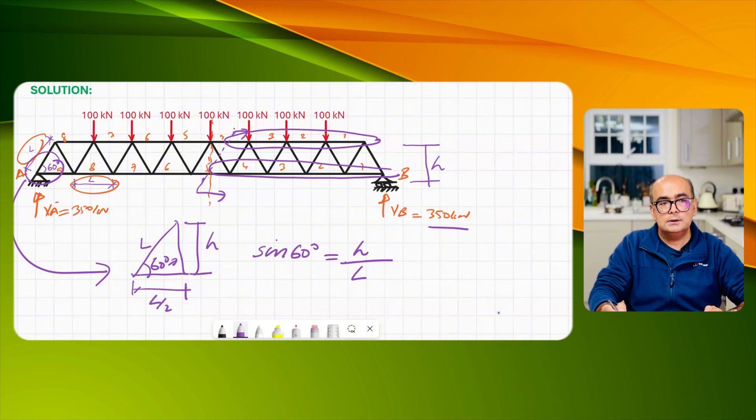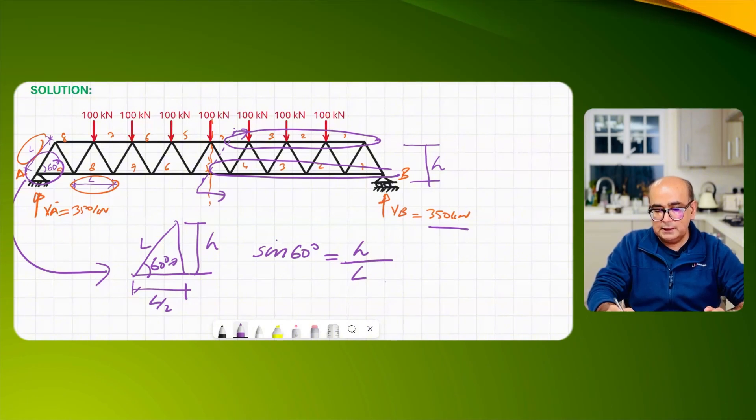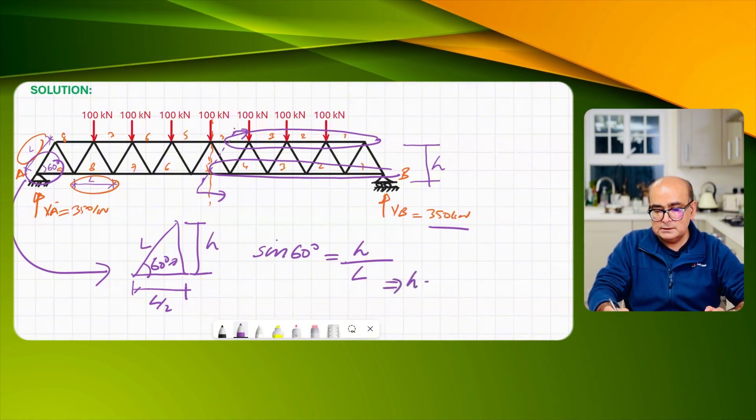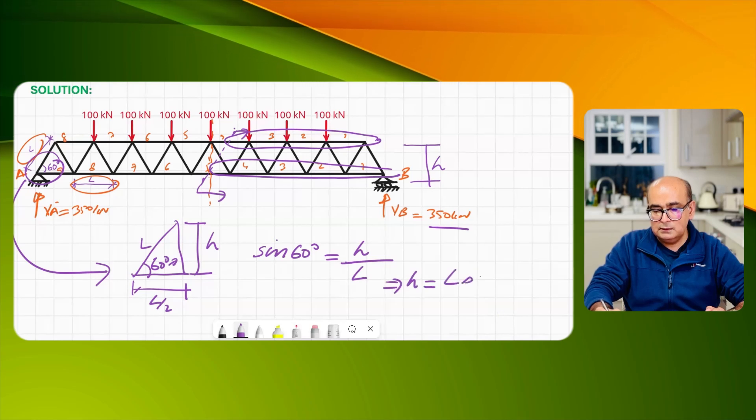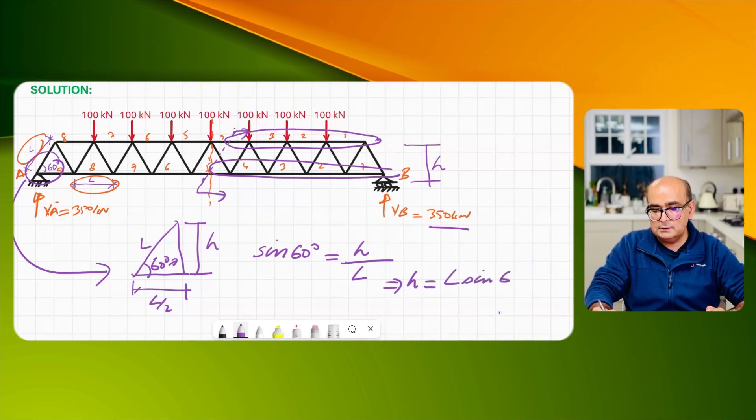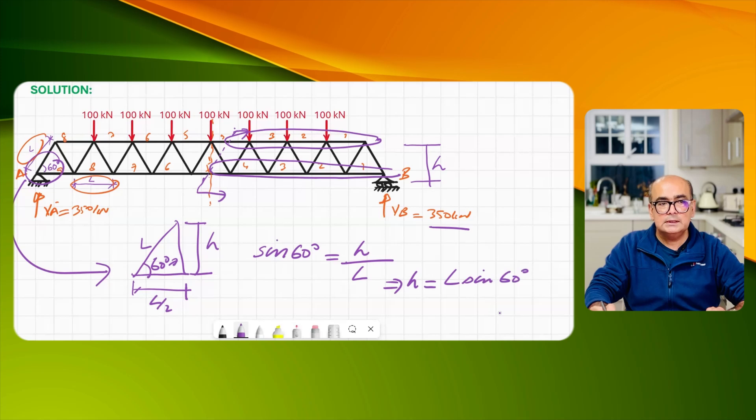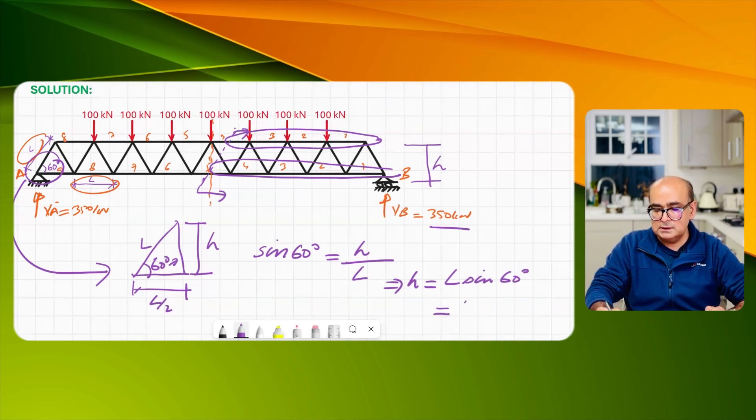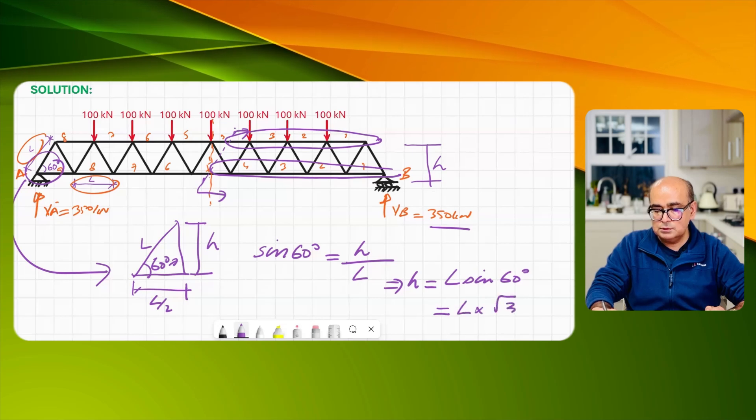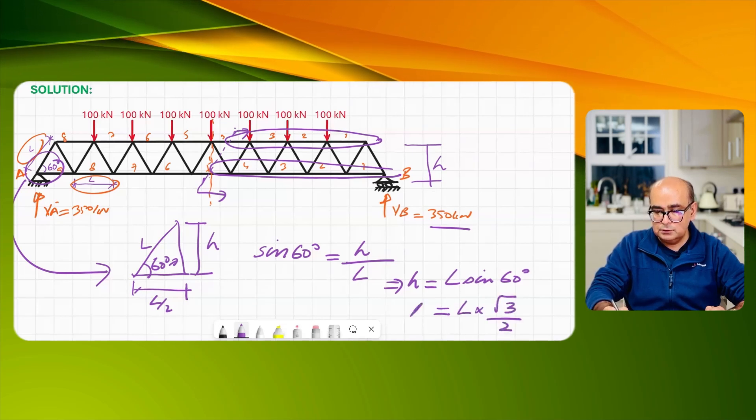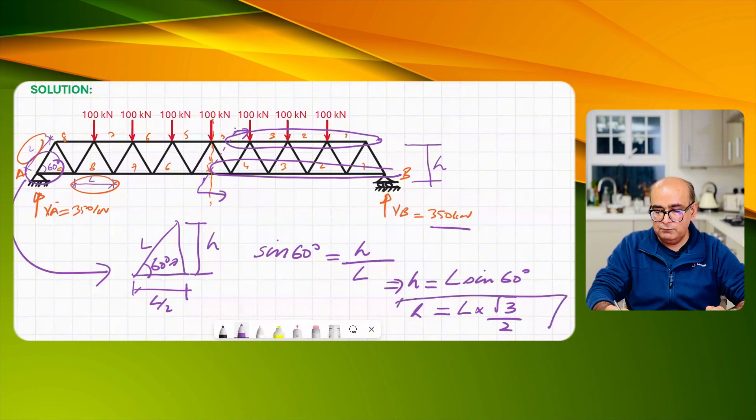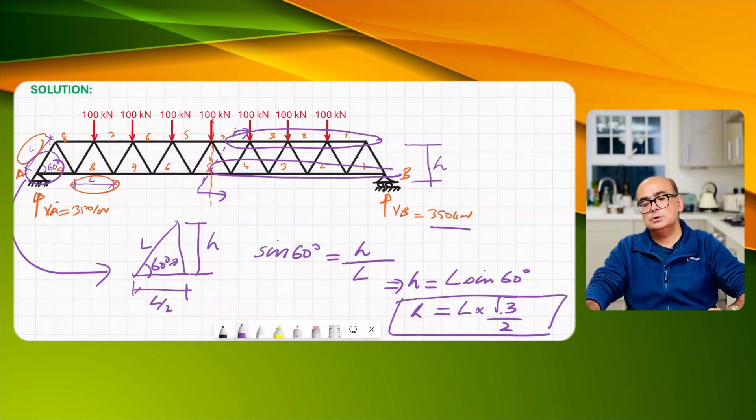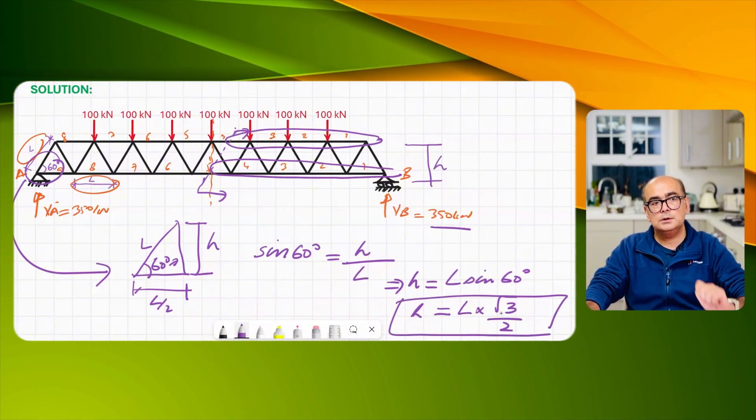And from here I can say that h is equal to L sine 60 degrees and you know that sine 60 degrees is equal to √3 over 2. So value of h is L into √3 over 2.